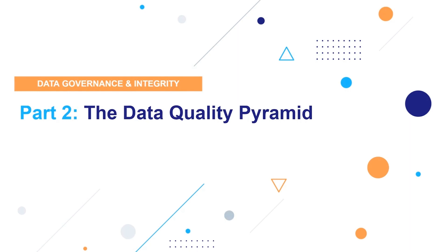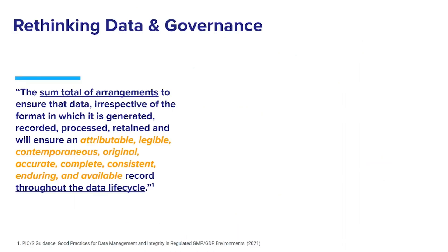In this section, we will explore the concept of the data quality pyramid with specific attention to data governance as a necessary element for strong data integrity. Here we have a definition of data governance from the PICS guidance on good practices for data management and integrity, published in 2021.